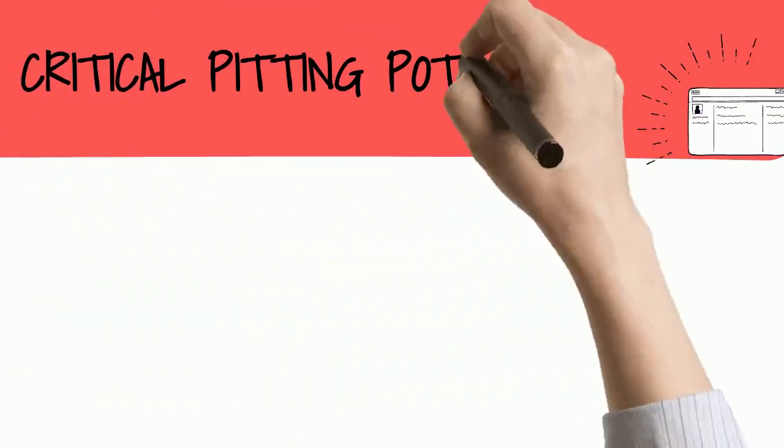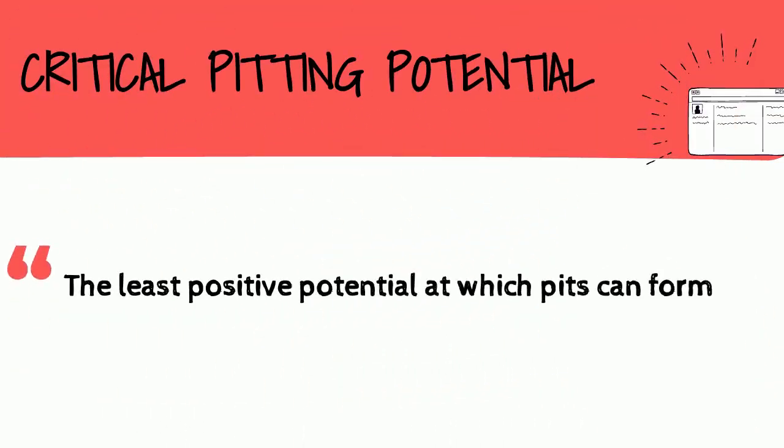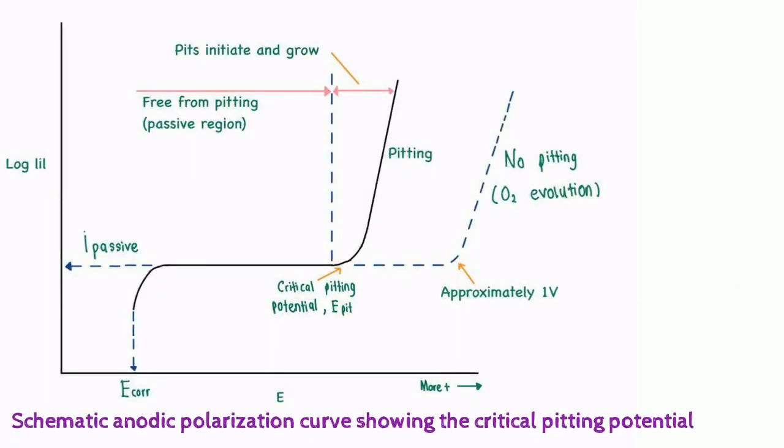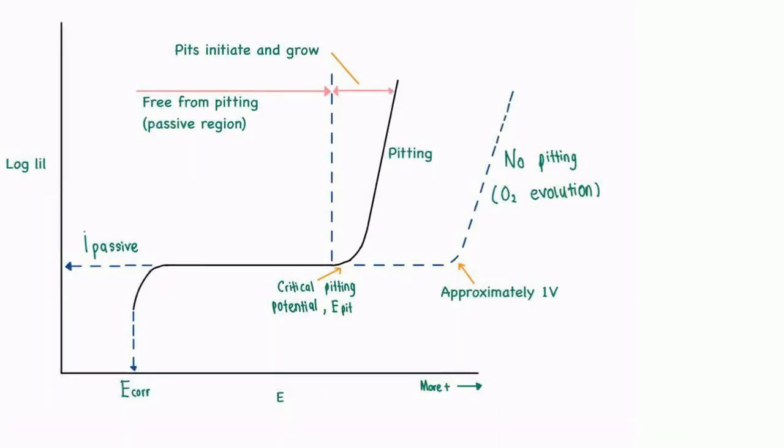Now we are going to explain the critical pitting potential. It is the least positive potential at which pits can form. The graph shown is the schematic anodic polarization curve showing the critical pitting potential for a passive metal.